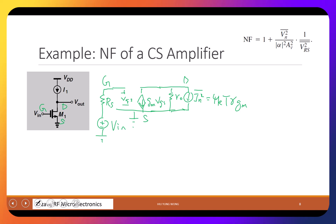I have input noise from the source and transistor noise from the amplifier. My goal is to find VN² — the noise contribution from this transistor and amplifier.